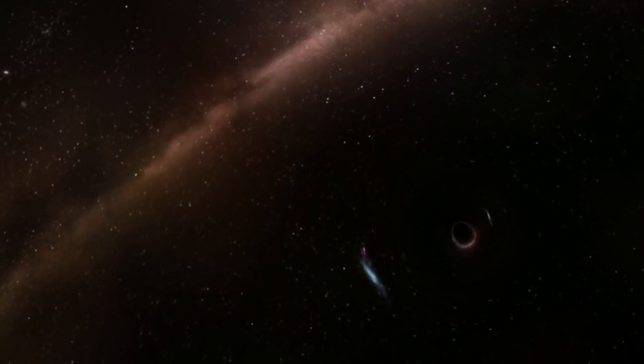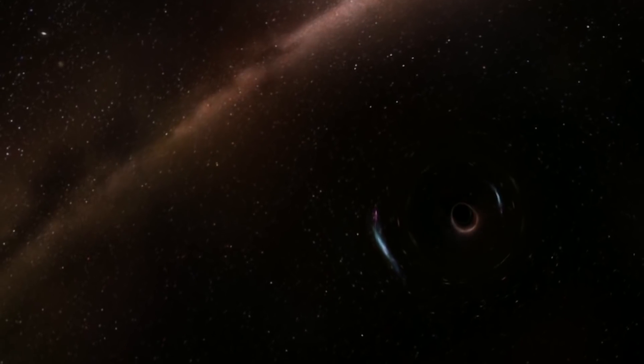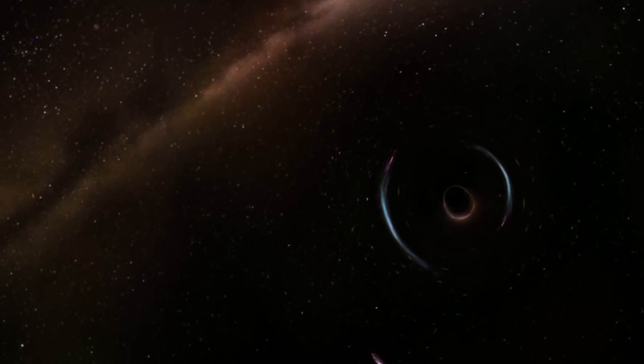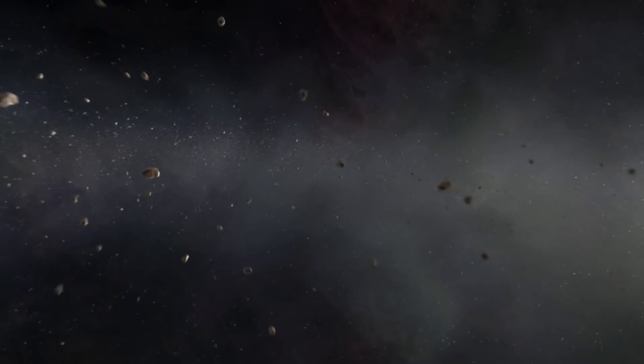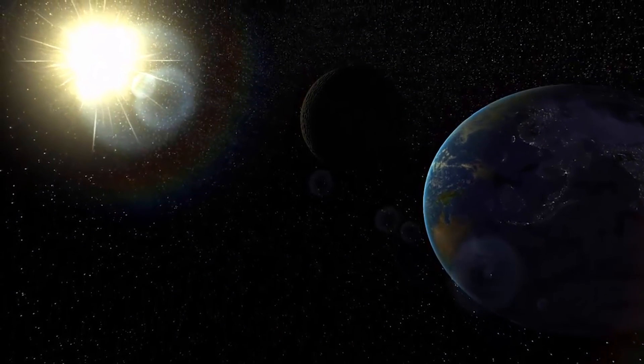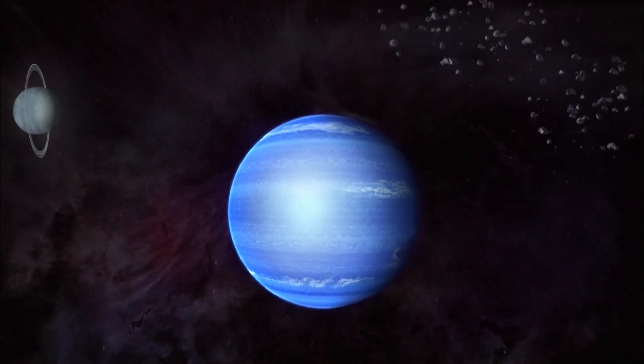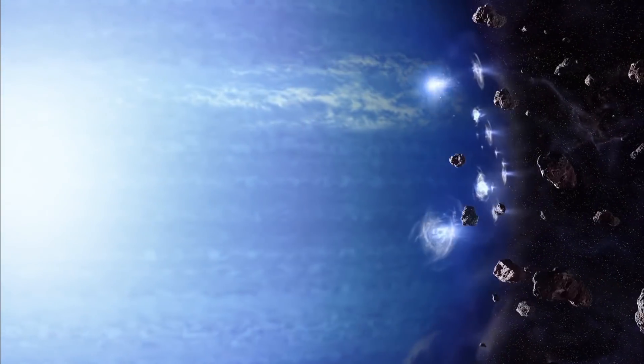It's possible that the gravitational disruption caused by the black hole traveling through the Oort Cloud could gravitationally catapult a large number of additional comets into the inner solar system, some of which might strike Earth or other planets.